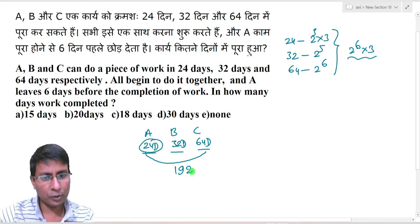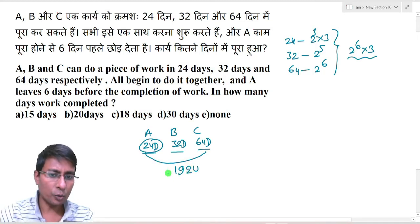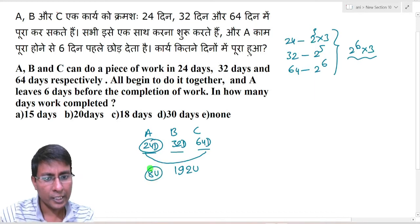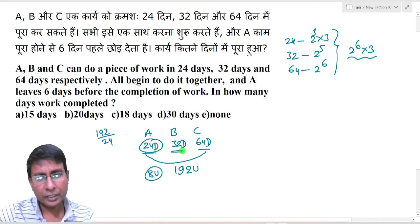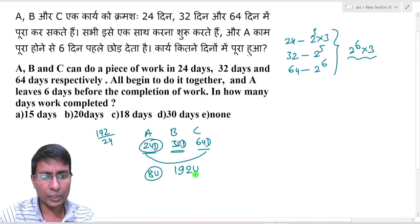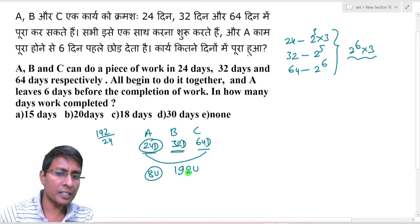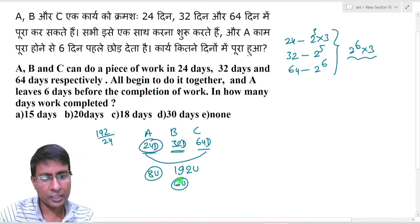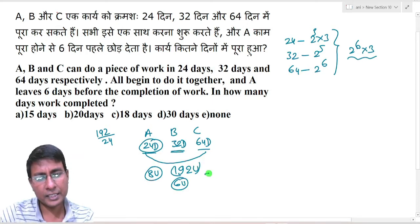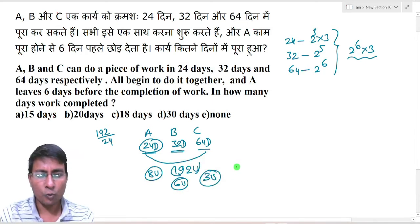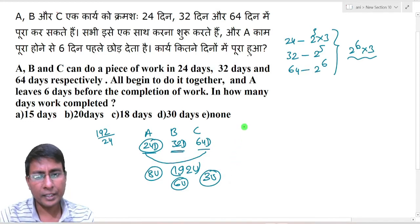If A completes 192 units in 24 days, then A's per day efficiency = 192 ÷ 24 = 8 units. If B completes 192 units in 32 days, B's efficiency = 6 units. And if C completes the work in 64 days, C's efficiency = 3 units.